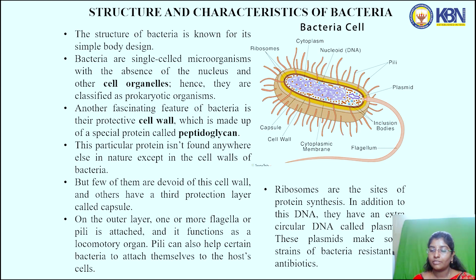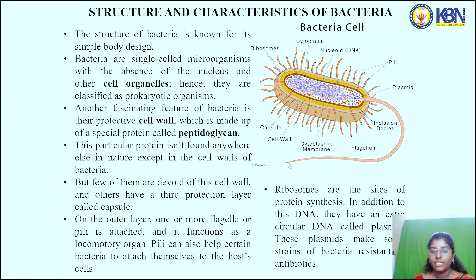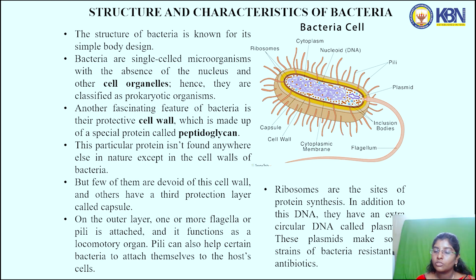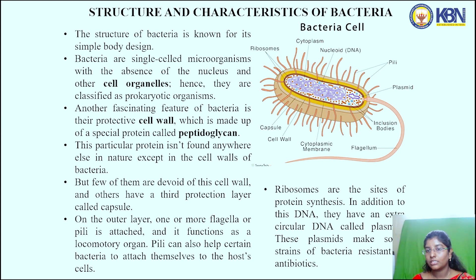Few bacteria don't have a cell wall but do have a protective outer layer called the capsule. On the outer surface, we can observe the flagella — a long hair-like structure that functions as a locomotory organ — and the short hair-like structures called pili. Pili can also help certain bacteria to attach themselves to host cells. Ribosomes are the sites of protein synthesis. In addition to their DNA, bacteria have an extra circular DNA called plasmids, which make some strains of bacteria resistant to antibiotics.